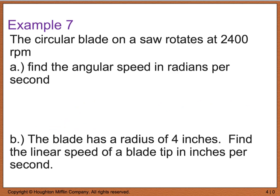Example 7 says that the circular blade on a saw rotates at 2400 RPM, which, for those of you that don't know, RPM is revolutions per minute, and if we write that out, we can write it as a fraction. So, we have revolutions per minute.